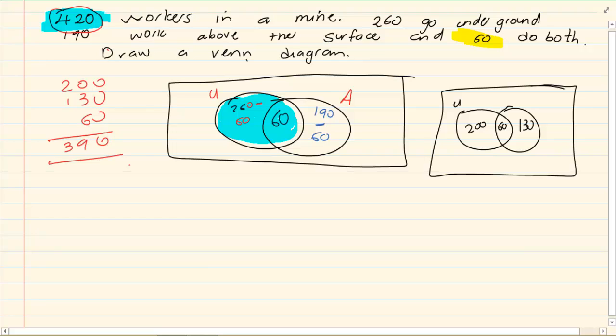Now if you count, they are telling us that there are 420 workers. You have 200 plus 130 plus you have your 60 which is equal to 390. Something is not right. Our entire sample space is not used. So how many are not going underground neither are they above the ground. Maybe they are in the office or maybe they are just doing something else. So we know there is 420. You have only used up 390. So the balance is 30.